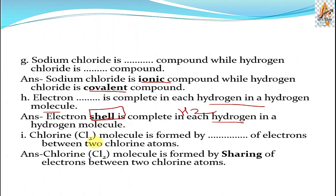Part i: Chlorine Cl2 molecule is formed by sharing of electrons between two chlorine atoms. They share each other electrons and they complete their configuration, so answer is sharing.